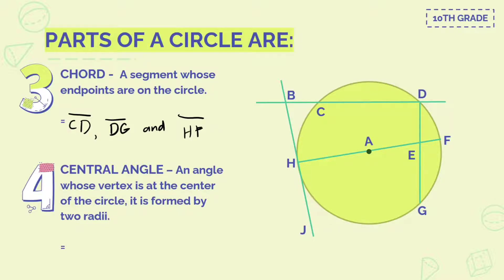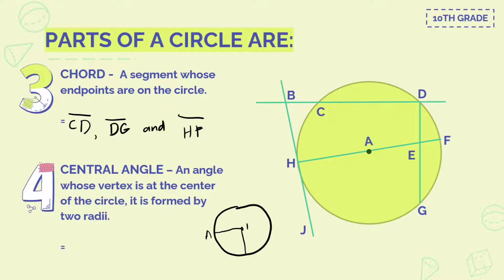Next is central angle — an angle whose vertex is at the center of a circle. It is formed by two radii (radii is the plural form of radius). We don't have a central angle on our main circle, so here is a separate example. The center of the circle, formed by two radii, gives us a central angle — for example, angle ABC. So we don't have a central angle on our main circle, but here is an example of a central angle.